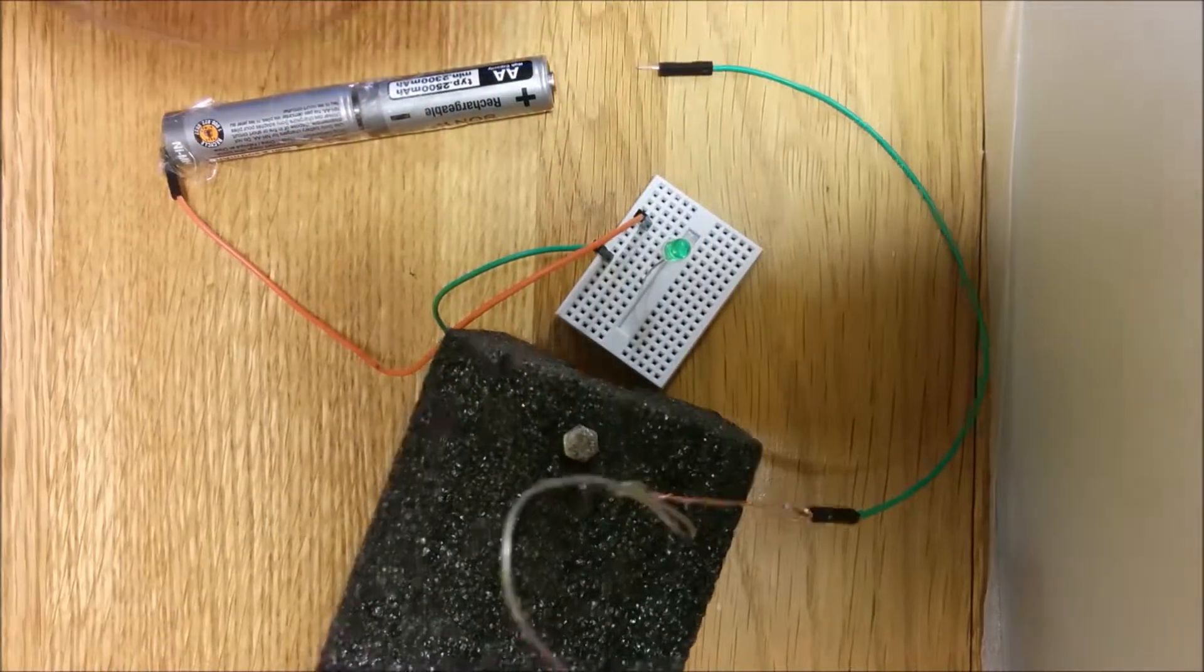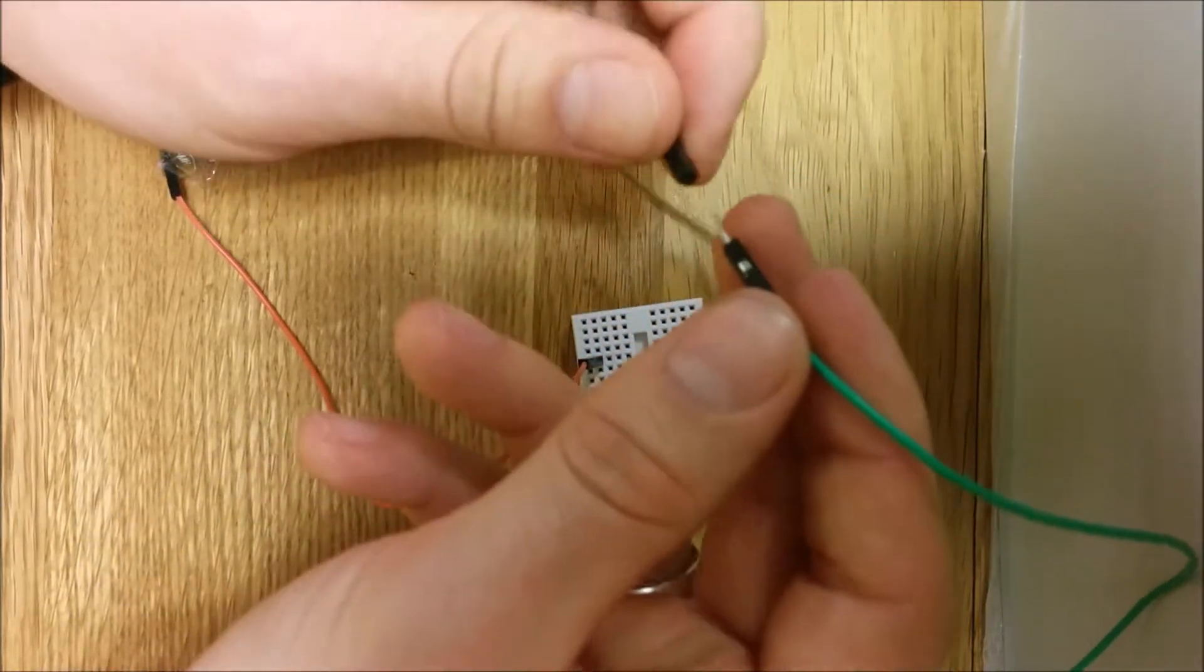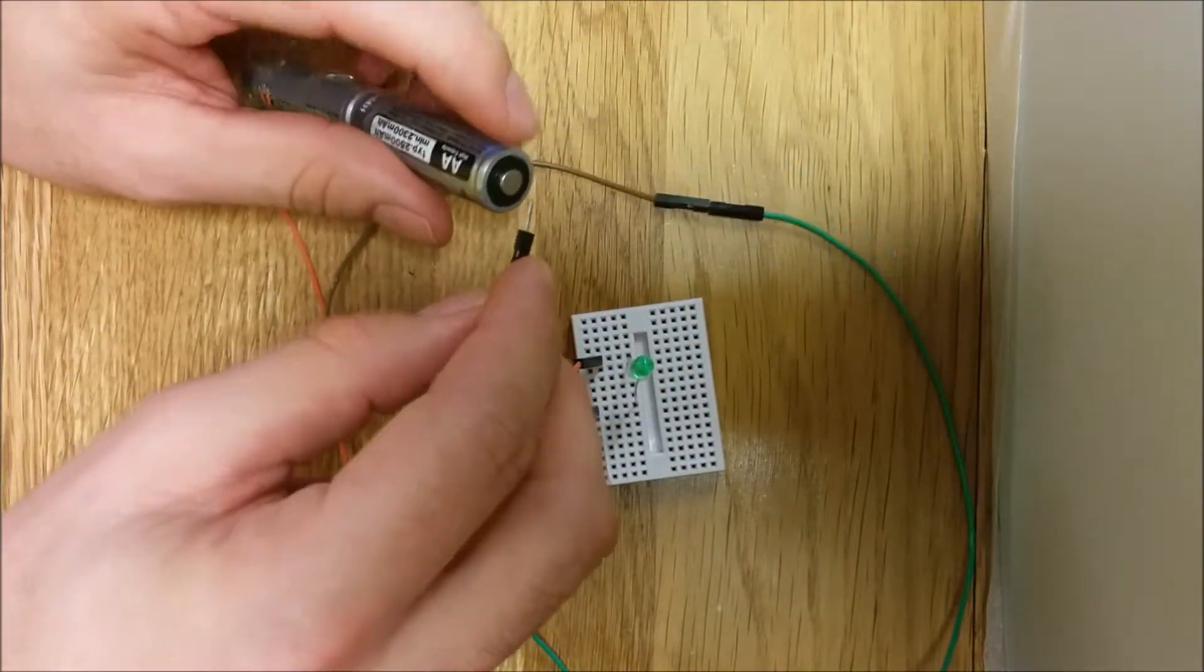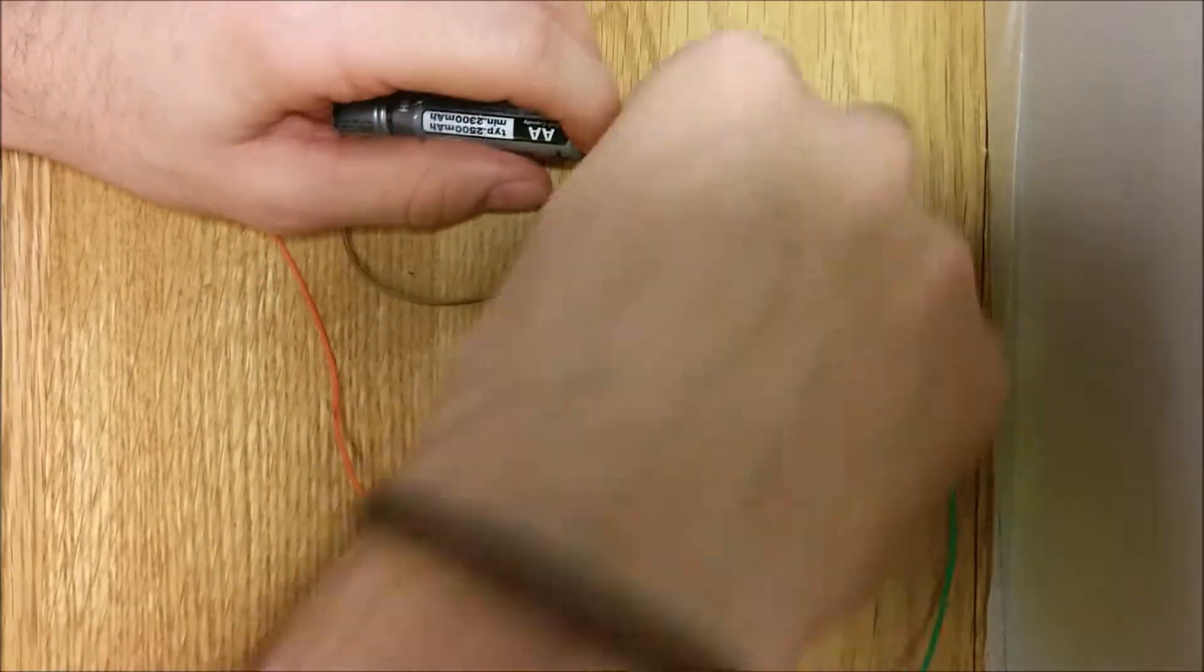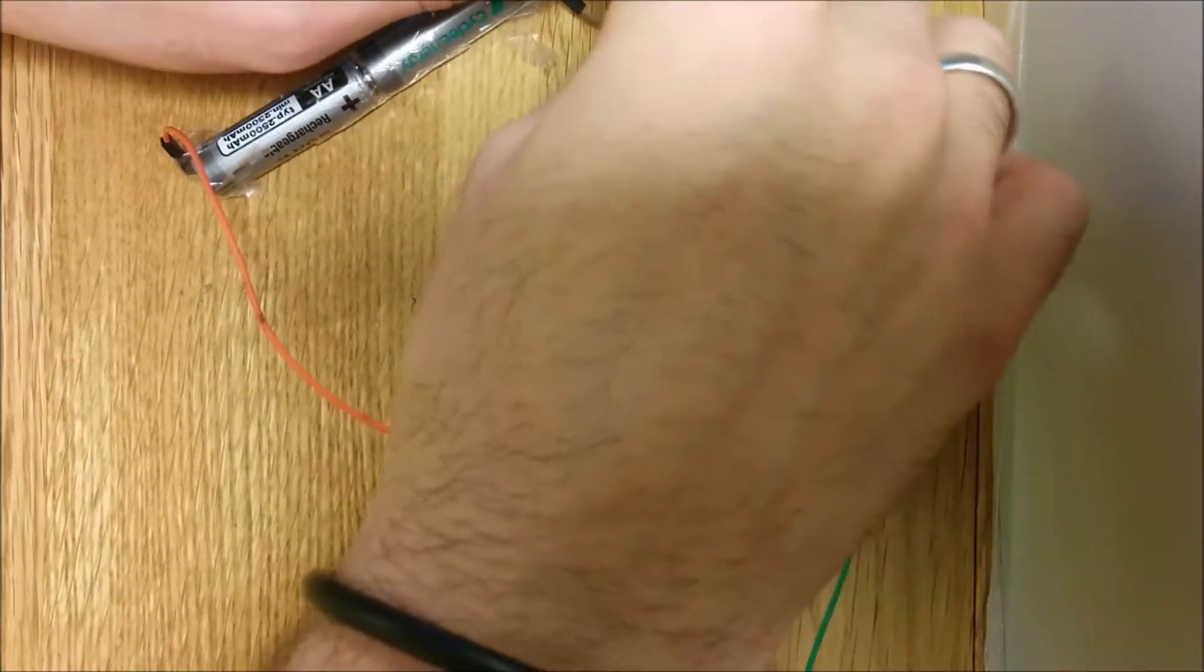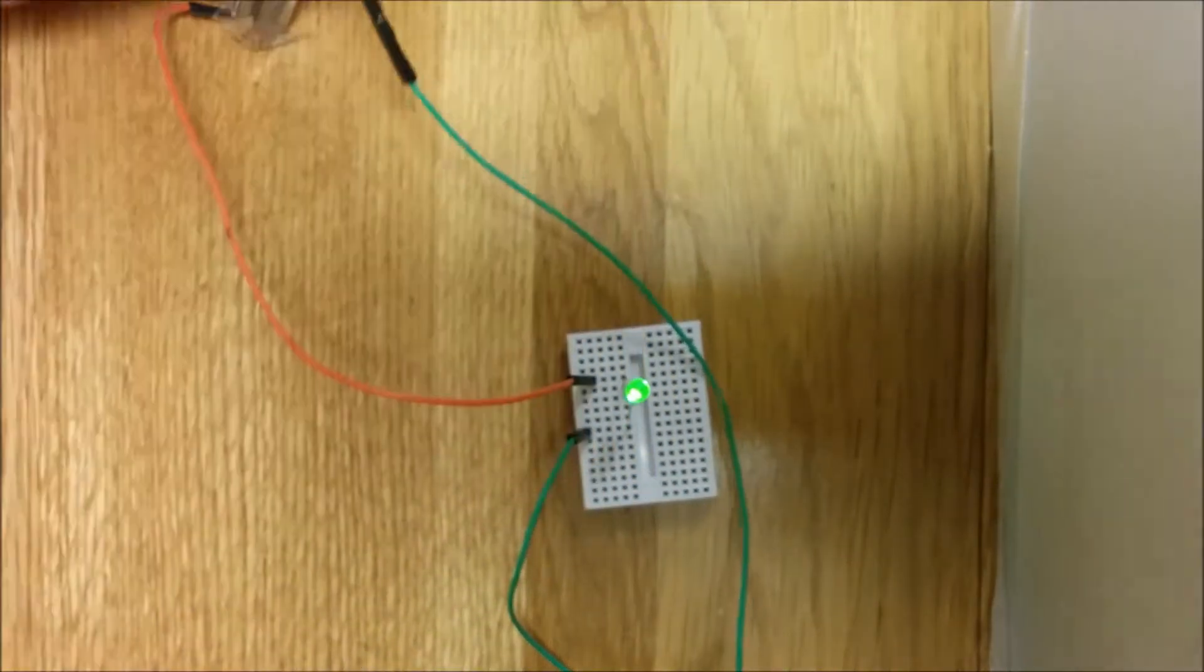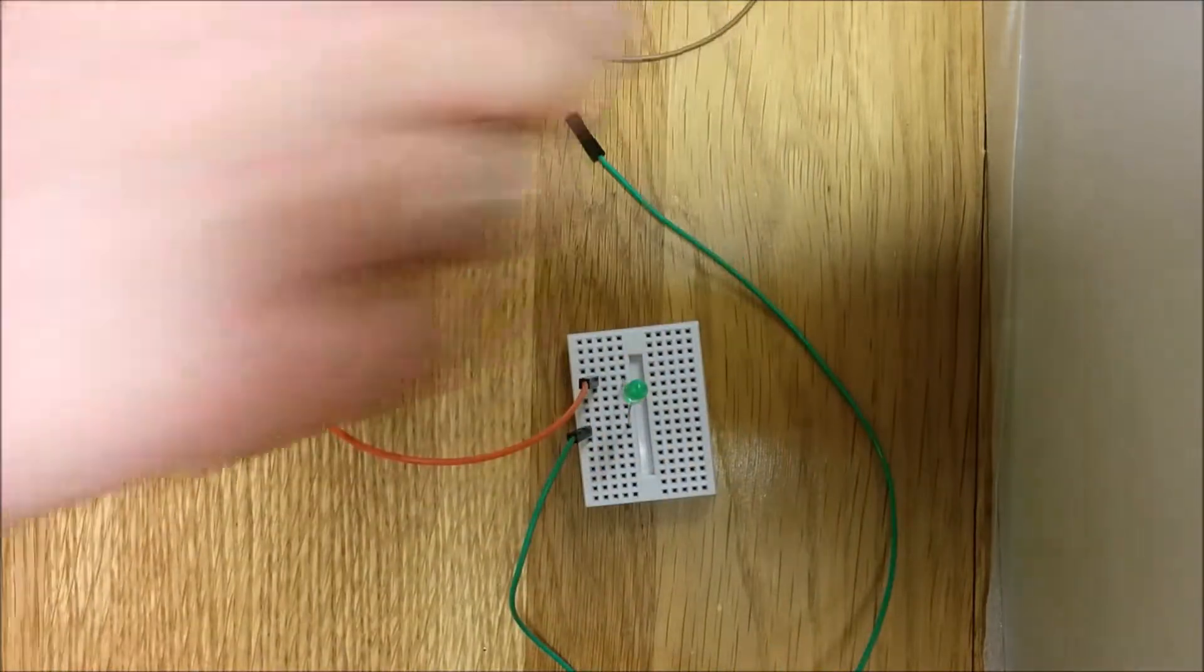I will plug these two wires like this, and connect this part on the positive side of the battery. I can just plug and unplug. When I plug it, the light turns on. When I unplug it, the light turns off.